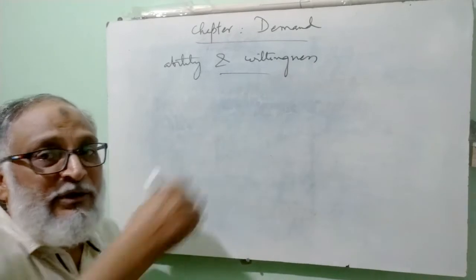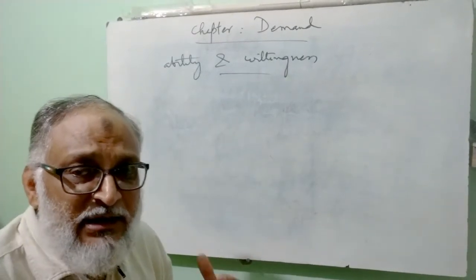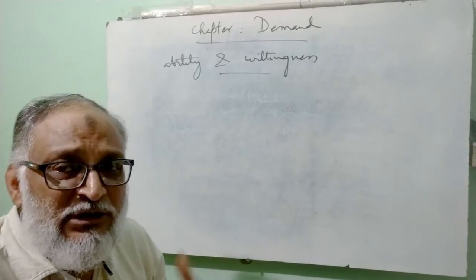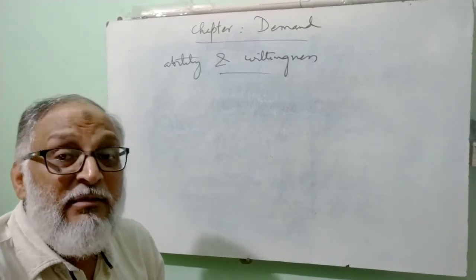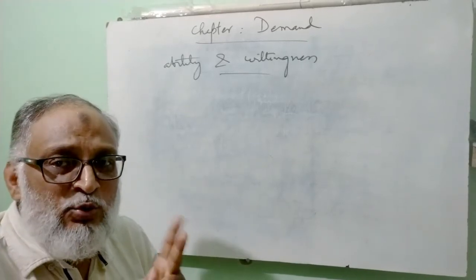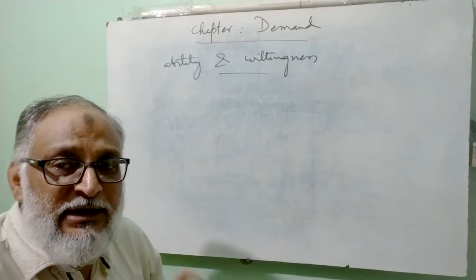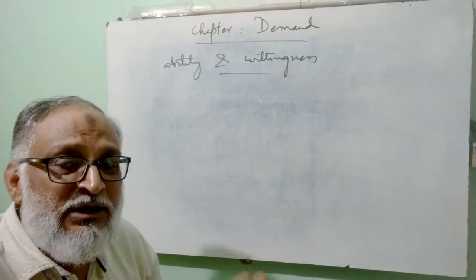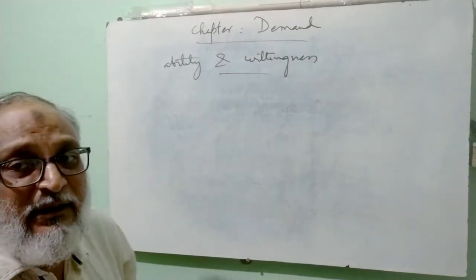These two things are very important. That is, if we have the ability to buy something — meaning we have enough money — and we also have the willingness — we want to buy it, we have the desire to get that thing — because from it we will get some satisfaction — then it would be called our demand.